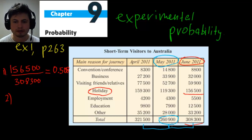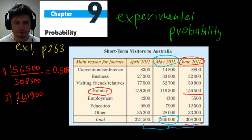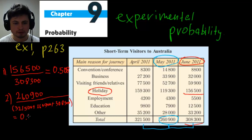That's 260,900 divided by the sum of 321,500 plus 260,900 plus 308,300, which gives an answer of 0.293 — approximately a 30% chance that someone who came to Australia arrived in May.